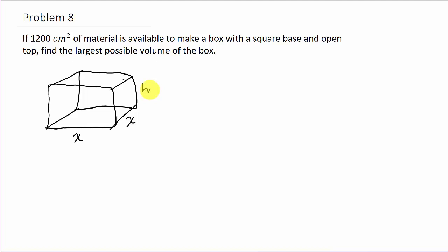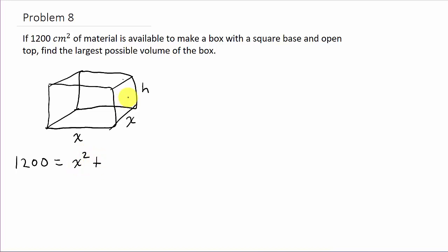They give us the amount of material: 1200 square centimeters. That covers the sides and the bottom — there's no top because it's an open top. So 1200 square centimeters is the surface area. The area of the bottom is x times x, which gives us x squared.